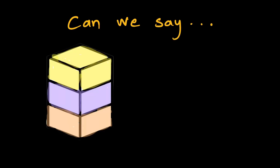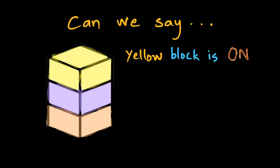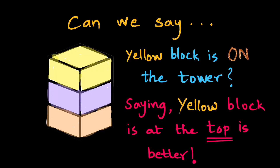But can we say that the yellow block is on the tower? Well, we can say that, but it just looks weird. The better thing to say is that the yellow block is at the top. We could have said the yellow block is on the purple block, but saying that the yellow block is at the top of the tower tells us the position more nicely.